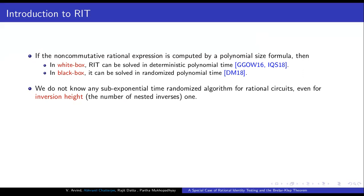However, we do not know any sub-exponential randomized algorithm for rational circuits — that is, when the underlying structure is a DAG instead of a tree. The situation is even worse when we consider inversion height of rational expressions, which is the number of nested inverses required to compute the expression. Non-commutative polynomials are rational expressions of inversion height 0, and we have a randomized polynomial time PIT algorithm for them. But for rational circuits of inversion height 1, we still have no sub-exponential time randomized algorithm.